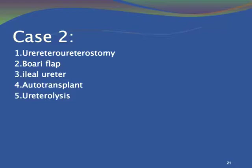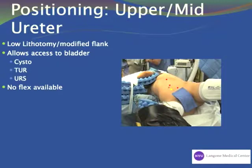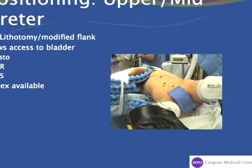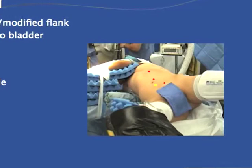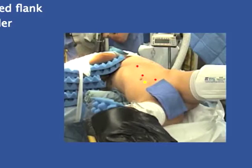We prefer a low lithotomy modified flank position that allows access to the bladder as well as allows the robot to come from the flank or from the feet. In terms of trocar configuration, we put our camera port just lateral to the umbilicus, spread our left and right arms as far apart as possible, and then place our assistant port — typically a 5-millimeter trocar — just above the suprapubic area.